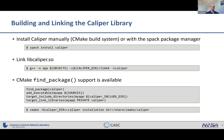Once installed, you link the Caliper library libcaliper.so to your program. If you use CMake in your project, Caliper provides a CMake package with find_package support, giving you a CMake target you can link directly to your application.